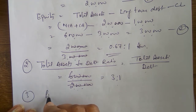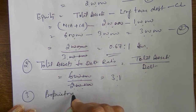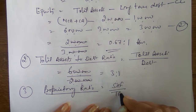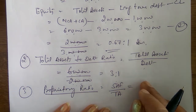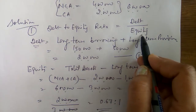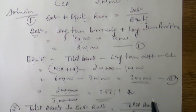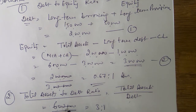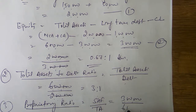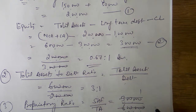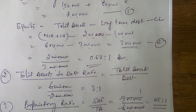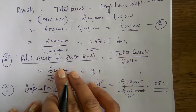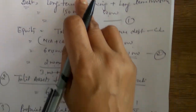Third ratio: proprietary ratio. Formula: shareholders fund / total assets. Shareholders fund means equity = ₹3,00,000 (calculated earlier). Total assets = ₹6,00,000. Proprietary ratio = ₹3,00,000 / ₹6,00,000 = 0.5 : 1. So our three results are: debt to equity = 0.67:1, total asset to debt = 3:1, proprietary ratio = 0.5:1.